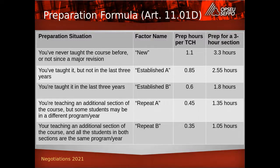If you've taught the course before but not in the last three years, and there hasn't been any major revision since you last taught it, that would be considered Established A — you'd be attributed 0.85 preparation hours for every hour in the classroom, so 2.55 hours each week to prepare a three-hour class as a minimum. If you've taught it in the last three years, it would be considered Established B, and you'd be attributed 1.8 hours each week to prepare a three-hour section.